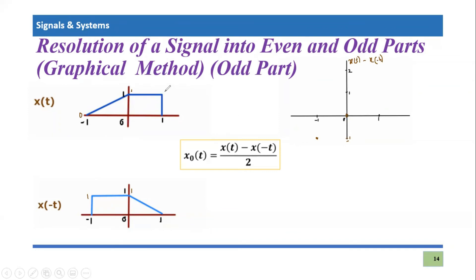At t = 1, x(t) is one and x(-t) is zero, so one minus zero would be simply plus one. Connecting these three points, it looks like this. We know that before t = -1 the signal is zero, and after t = 1 the signal is also zero. So this is x(t) minus x(-t).